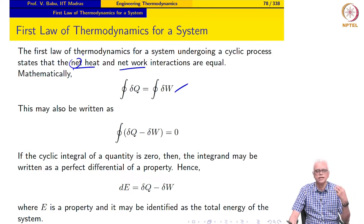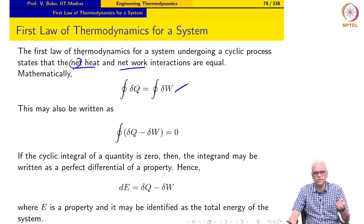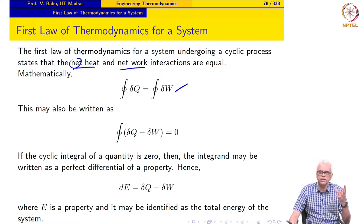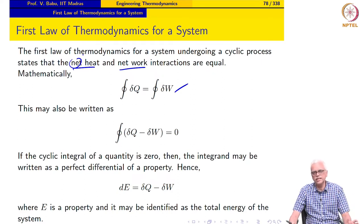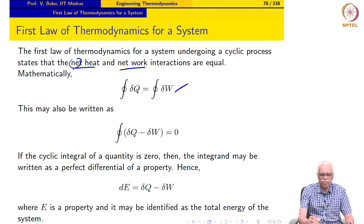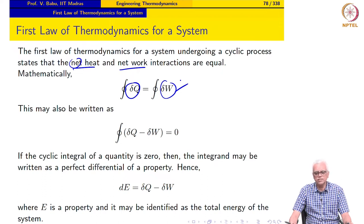For instance, in some parts of the cyclic process, the system may be receiving heat, and in other parts it may be rejecting heat. Similarly, the system may be producing work during some parts of the cycle and receiving work in other parts. With the sign convention we have, the algebraic sum of the heat interaction and algebraic sum of the work interaction are equal for a system that executes a cyclic process.